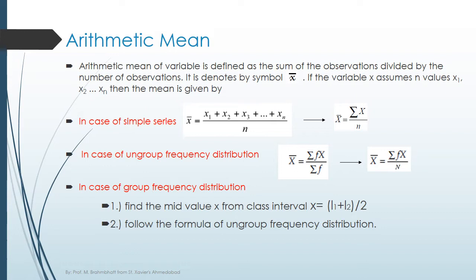The second category, which is ungrouped frequency distribution. If in a question we have the variable x and their frequency, then the formula of arithmetic mean is x bar equals sigma fx divided by n. It means the summation of f into x variable divided by total number of observations.